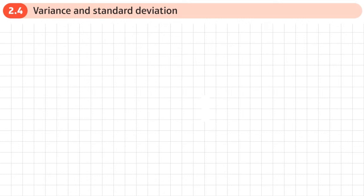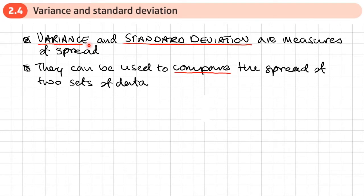This is the fourth section of Chapter 2 on measures of location and spread. This section is on variance and standard deviation. Variance and standard deviation are measures of spread. They can be used to compare the spread of two sets of data.